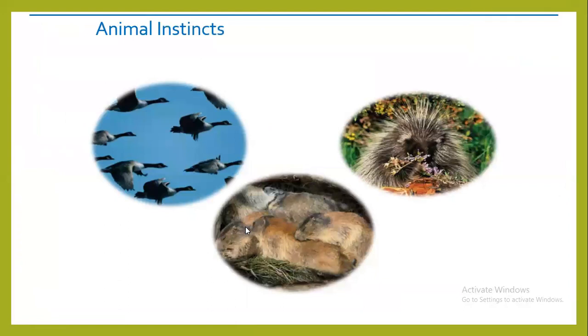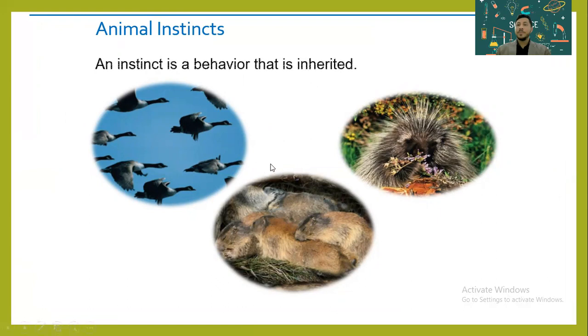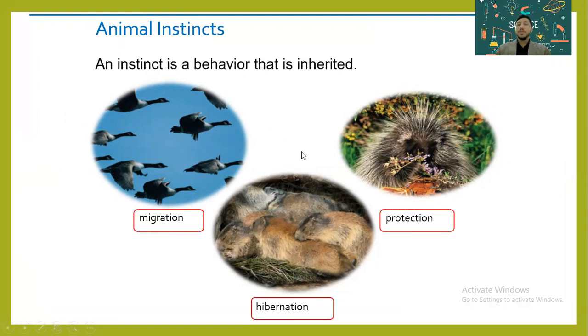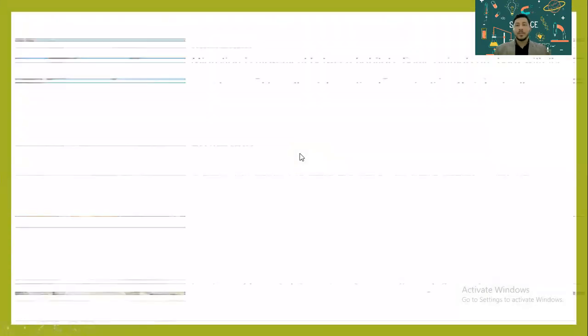Examples of animal instinct include migration, hibernation, and protection. Those are three examples of instinct, and we're about to talk about each in detail.